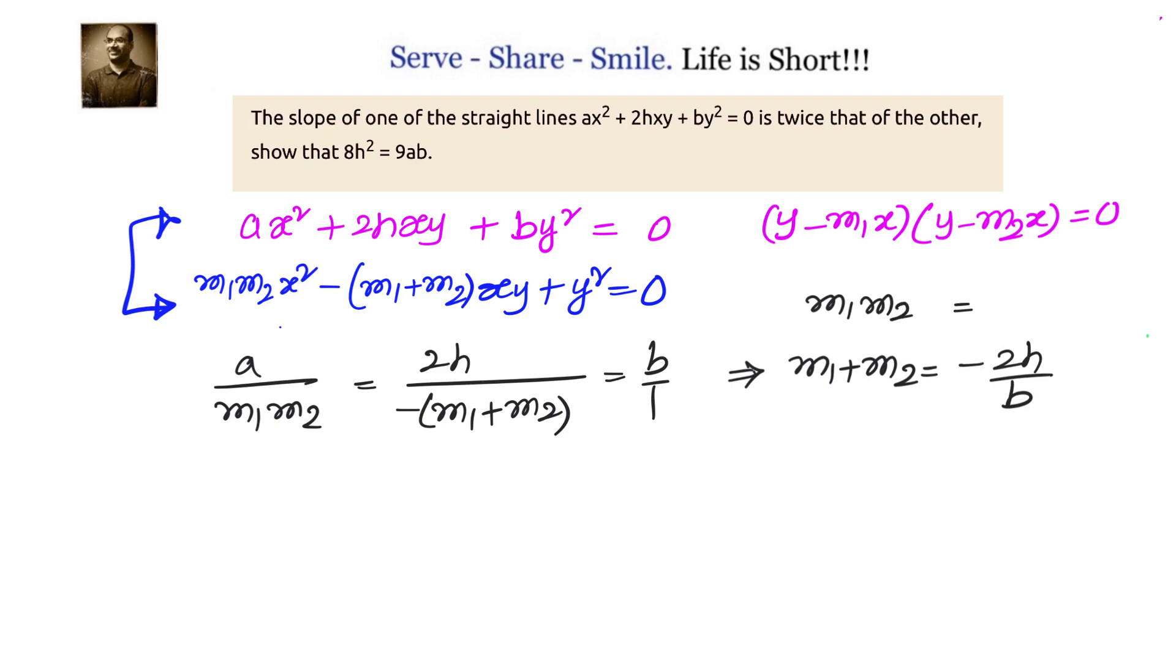It is already given to us that the slope of one straight line is twice that of the other. That means if M1:M2 = 1:2, then if you take M1 as M, then M2 will be 2M.